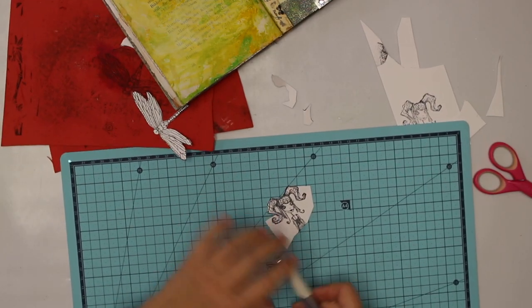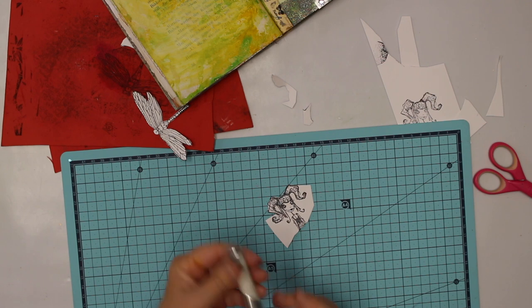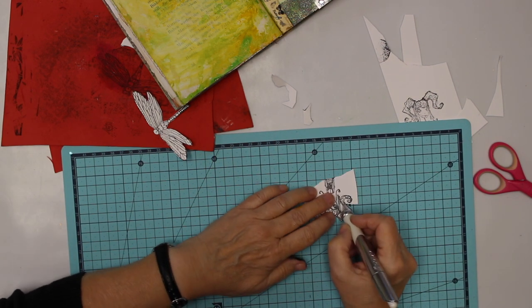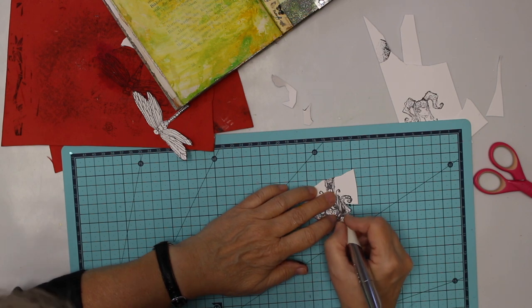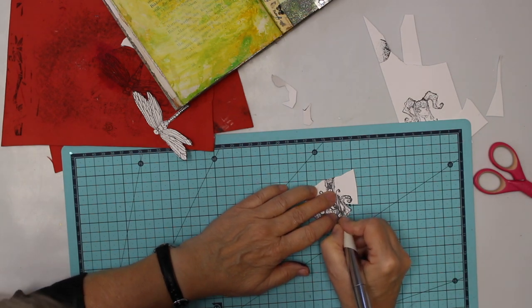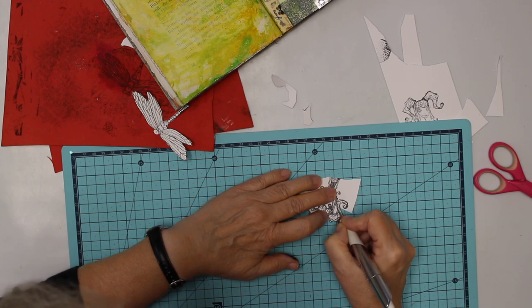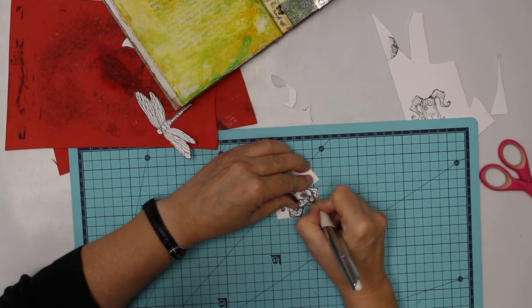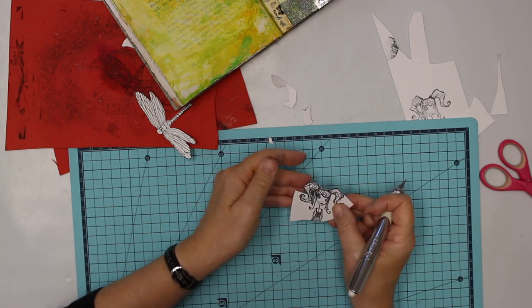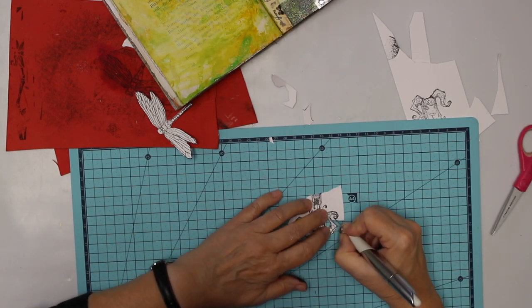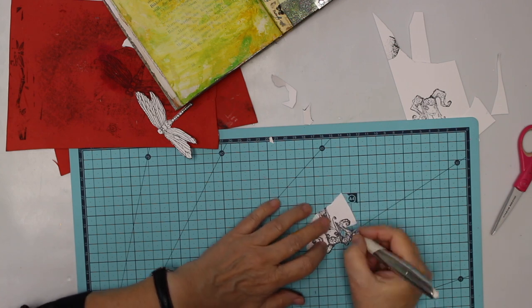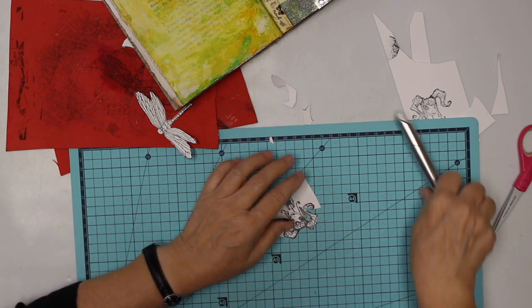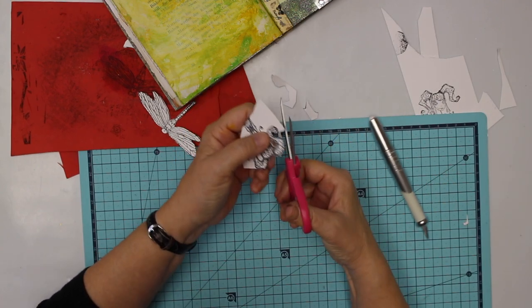Now to cut out the inner part I actually prefer a blade. Also, I prefer the scissors but for some parts it's really easier with the blade. And I'd rather turn the paper than the blade.